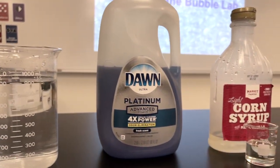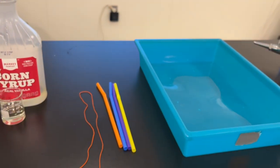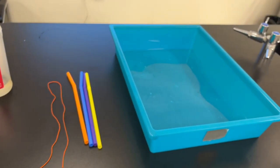You'll need some water, some dish soap, corn syrup, some light thread, four straws, and a large shallow tray to put the solution in.